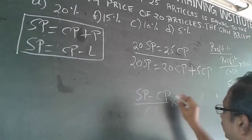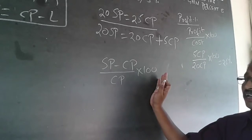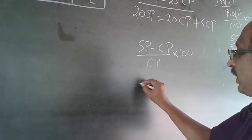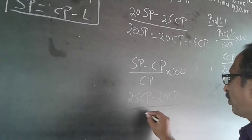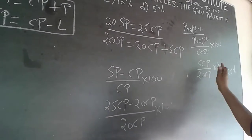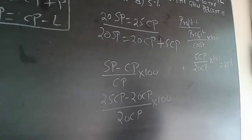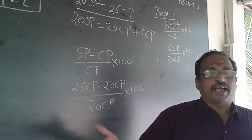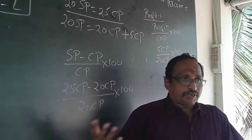The formula is: (selling price minus cost price) divided by cost price, multiplied by 100. Here, selling price is 25 CP and cost price is 20 CP, so it is (25 CP minus 20 CP) divided by 20 CP, multiplied by 100 — which gives the same 25%. Either way, once you understand it, no working is required: 5 articles in hand, 20 articles converted to money, 5 by 20 is 25%.